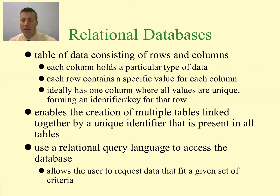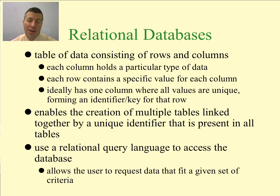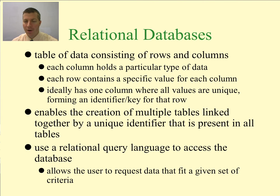A relational database, specifically, is a table of data consisting of rows and columns where each column holds a particular type of data, like name, which would hold a string. Each row contains a specific value for each column. Ideally, there is one column where all of the values are unique, and this is normally referred to as a primary key. It could be more than one column combined to make a primary key, but oftentimes we want it to be just one column.